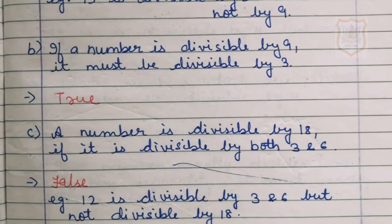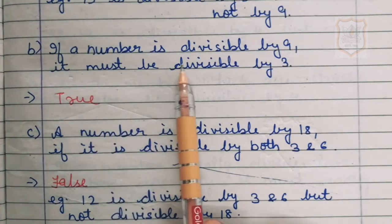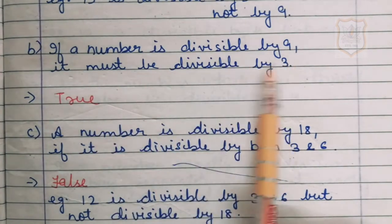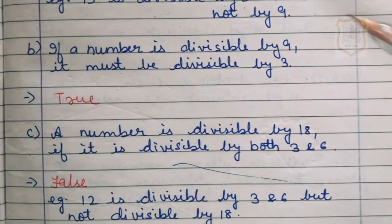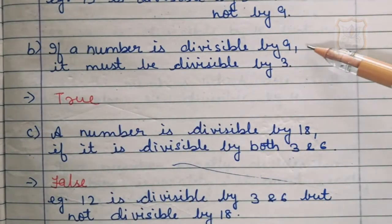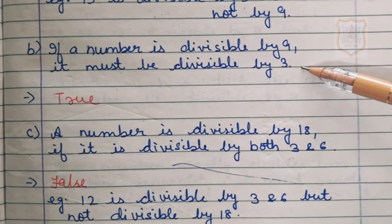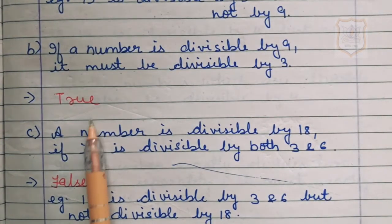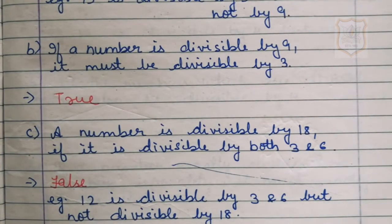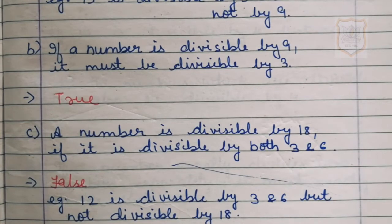Part B of question number 1: if a number is divisible by 9, it must be divisible by 3. If a number is divisible by 9, it can also be divisible by 3. The answer is true, as 3 is a factor of 9. So if a number is divisible by 9, then it is divisible by all the factors of 9.